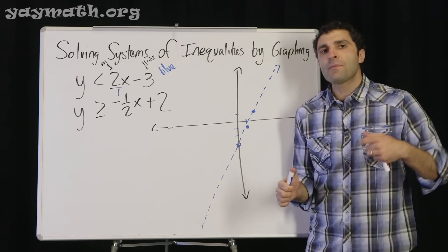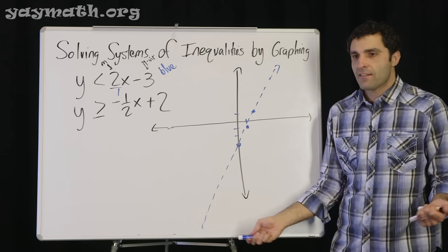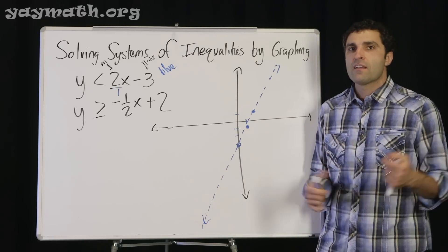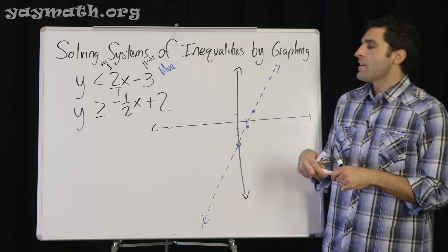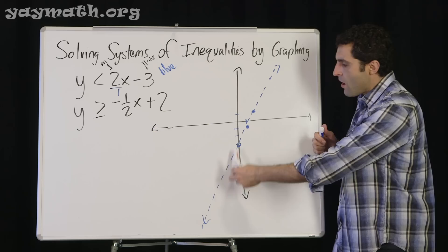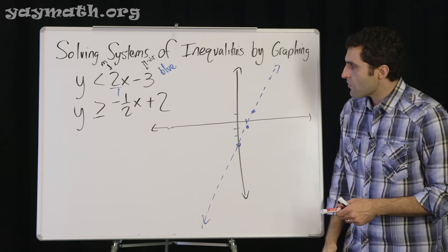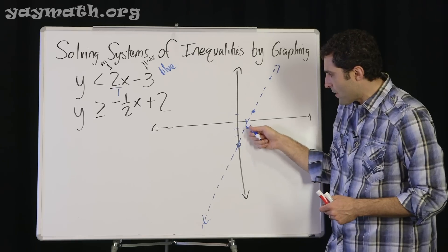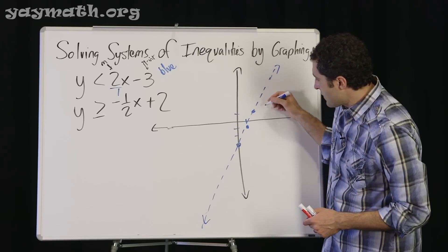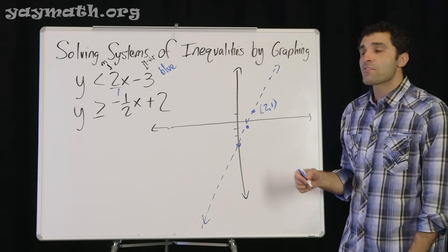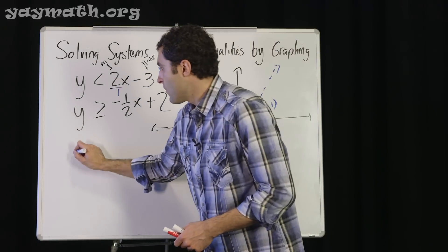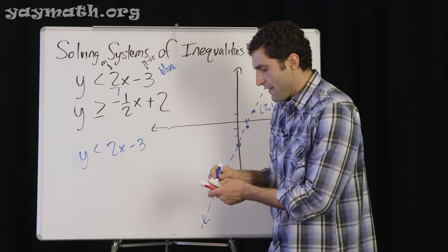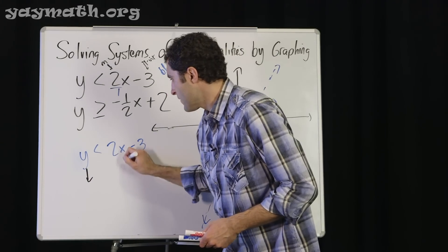A lot of people don't understand why we dot the line — it's not just a rule to memorize, we need to understand it. Every point that's on this line should fit inside the equation. Let's say this point is (2, 1). We have the inequality y less than 2x minus 3, and now we're going to plug in the point (2, 1).